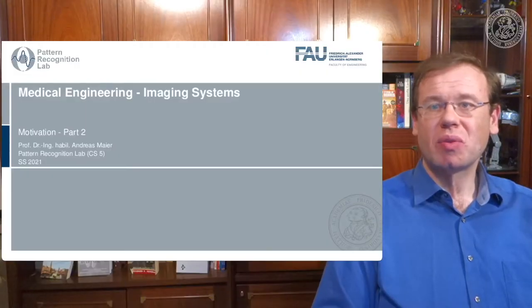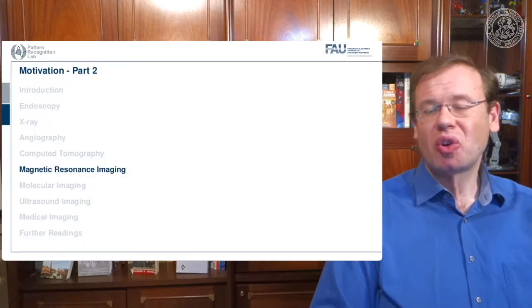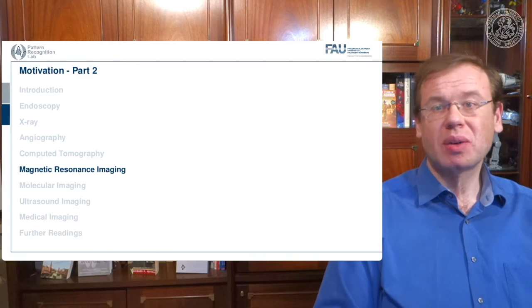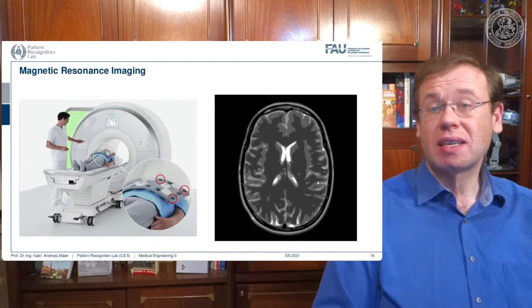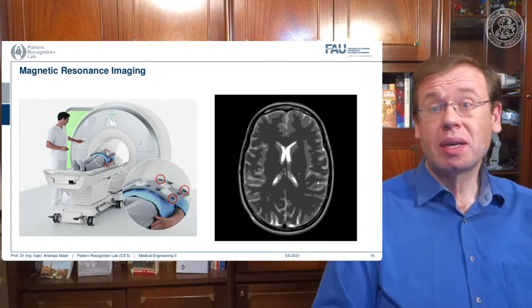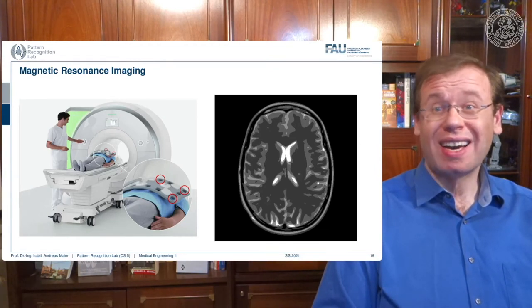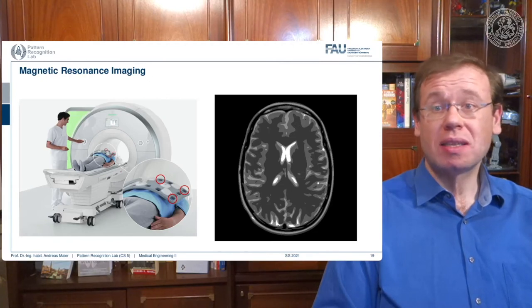Here in part two, we will have a look at a couple more imaging modalities. The first one I want to show is magnetic resonance imaging. These are scanners like the one you see here on the left-hand side. This is a newer modality than CT — you remember computer tomography used ionizing x-rays, and in this modality we use magnetic resonance imaging.